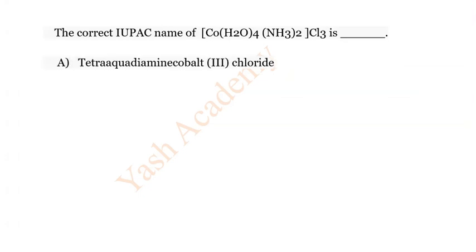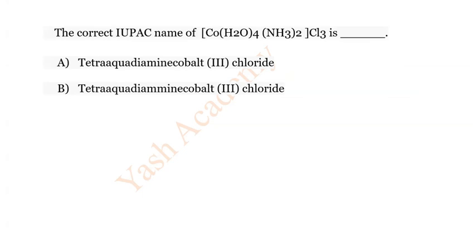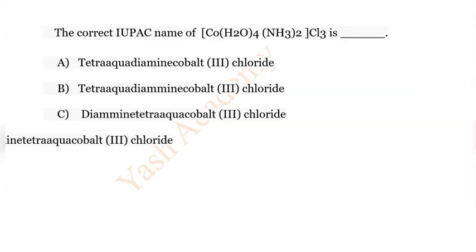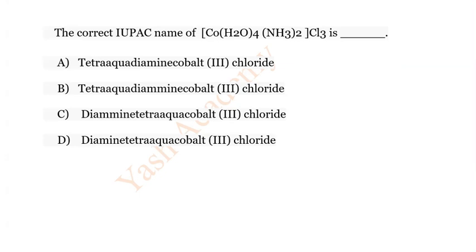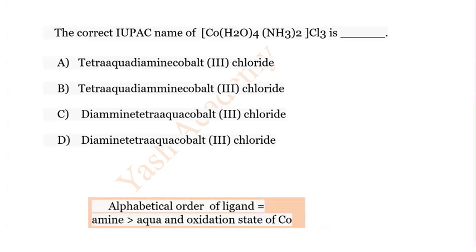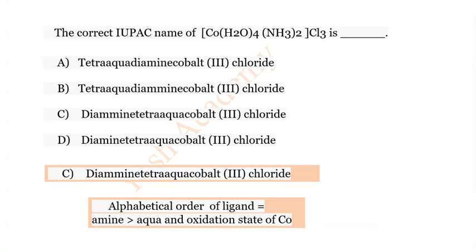Question 5: What is the correct IUPAC name of the given complex? Options: A) Tetraaquadiaminecobalt(III) chloride, B) Tetraaquadiaminecobalt(III) chloride, C) Diaminetetraaquacobalt(III) chloride, D) Diaminetetraaquacobalt(III) chloride. The correct answer is C, according to the alphabetical order of ligands.